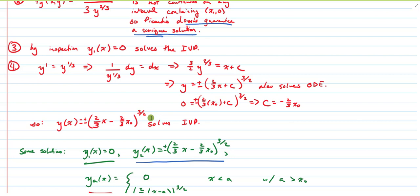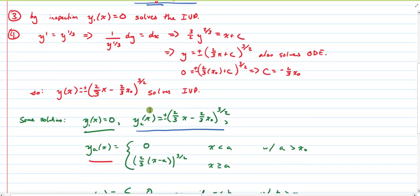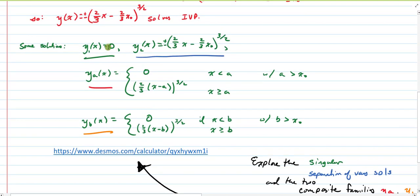Those two parts of this problem I don't think are too hard. What students usually have trouble with is building these families of solutions. So here what I did is I kind of took a composition of these two solutions. Here we have the function is zero until we get to a certain point A, and then we start following this function. So that's how I constructed this one family of solutions.